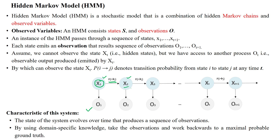Once state x2 is reached, x2 will generate observation o2. We are unknown about the state value, but we can access the observation value. From state x2, using the transition probability, the system moves into the next state x3. Once x3 is reached, it generates observation o3. We can move in this way until the t+1 time period. Finally, once x_{t+1} is reached from x_t, it generates observation o_{t+1}. The system evolves over time, producing a sequence of observations by a sequence of hidden states.